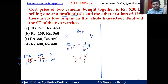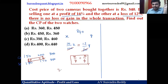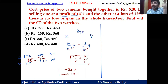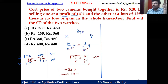Total parts: 3 plus 4 is 7 parts. Seven parts is the total cost of two cameras — 840 rupees. So one part is 120 rupees. The first camera cost x is 3 parts: 3 times 120 equals 360 rupees. The second camera cost y is 4 parts: 4 times 120 equals 480 rupees.